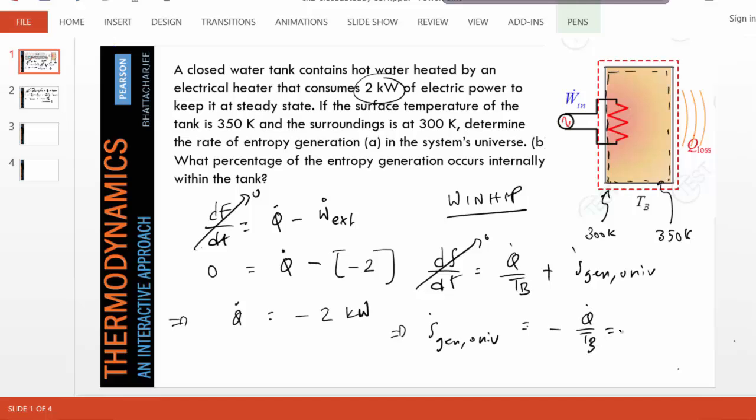Again steady state, so therefore the entropy generation in the entire universe is given as minus Q̇ over T_B. Minus Q̇ is 2, and the boundary temperature is 300 Kelvin, so the answer is 1 divided by 150 kilowatts per Kelvin. That's the entropy generation in the universe.